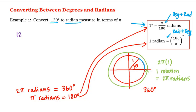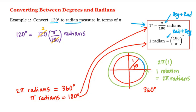So 120 degrees equals 120 times the radian measure of one degree, which is pi divided by 180 radians. Both 180 and 120 are divisible by 60, leaving us with a two and a three. Therefore, the radian measure of 120 degrees is two pi divided by three radians. Sometimes when measuring in radians, the word 'radians' is dropped and we just write two pi over three.